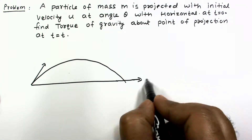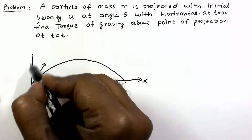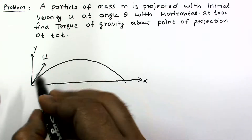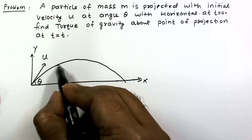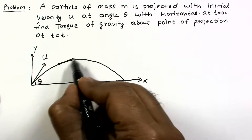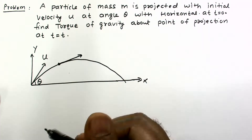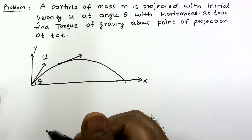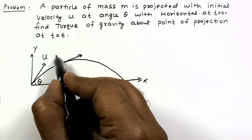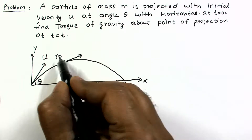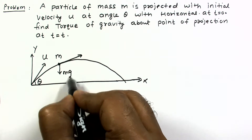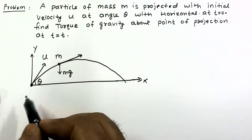Suppose this is the x-axis and this is the y-axis. The initial velocity is given as u at angle theta. At some general point in time, suppose the particle is here, and this is the direction of velocity. We have to find the torque of gravity. This is mass m and the gravitational force acts downward.